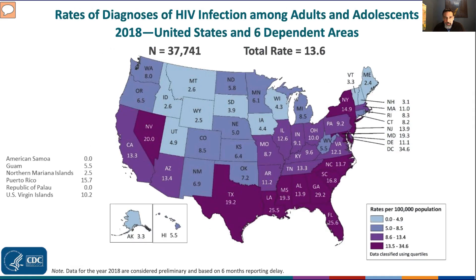Looking not at prevalence but at the number of new diagnoses per year for 2018: an estimated 37,741 people were diagnosed with HIV around the US. This is not quite new infections or incidence — it's more like new diagnoses. People diagnosed with HIV in 2018 could have been infected in 2018, but they also could have been infected years earlier. You can see how it varies across the US, with more diagnoses happening in the south and northeast when considering the number of people in the population — that is, the diagnosis rate per 100,000 population.